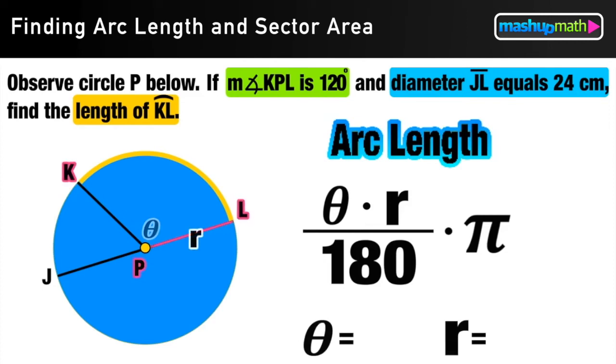We already know that angle KPL equals 120 degrees. So that's our value for theta. We also know that the diameter is 24 centimeters long. Divide that by two gives us our radius of 12 centimeters.